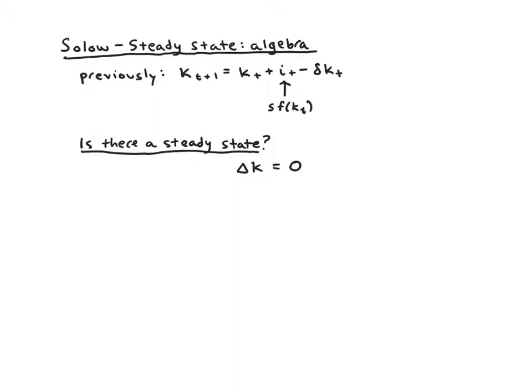Now we move on to our key question: is there a steady state to this model, and if so, how can we calculate it? The answer is yes, there is a steady state. The basic idea of a steady state is that things aren't changing, so in symbols that would be Δk, the change in k, equals zero.